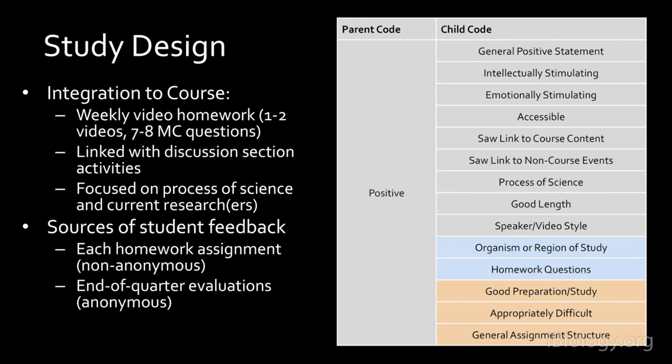Brittany and I coded the responses to both sources across each homework assignment and the end-of-quarter evaluations. We used three parent codes: usage (how students were interacting with the videos), positive categories, and negative categories. The gray lines in the table were found in all homework assignments and end-of-quarter evals. The blue categories — organism and homework questions — were only found on weekly homework assignments. The orange colored ones were only found on the end-of-quarter evaluation.